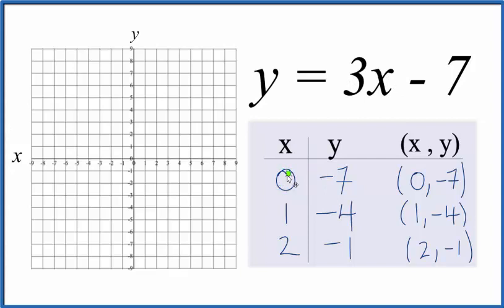So we have x is 0 and y is negative 7. So we go to 0 for x and down negative 7 for y.